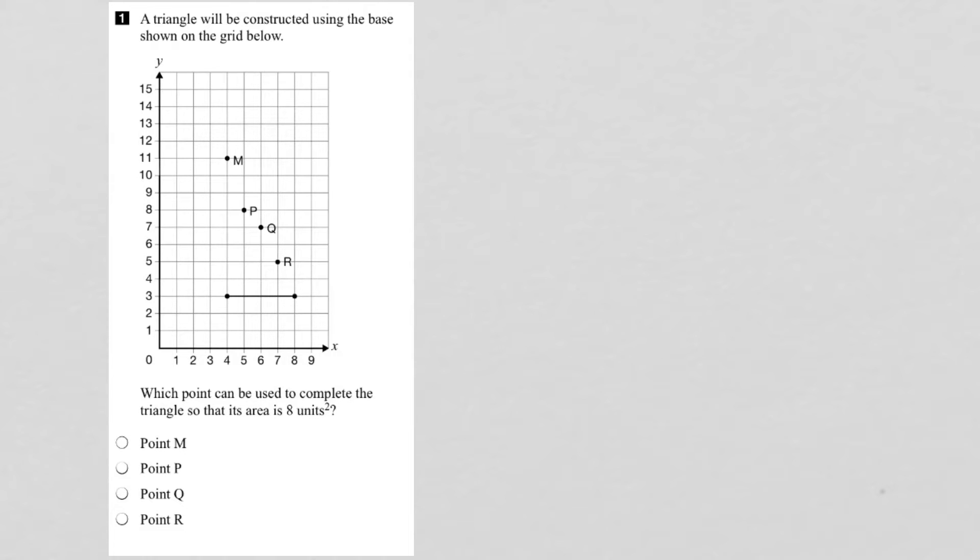Okay, in this question we're given a grid here and told that we are going to construct a triangle using this base down here. And then we're told to find out which of these points here could be used to make the triangle so that the area of the triangle is 8 units squared.